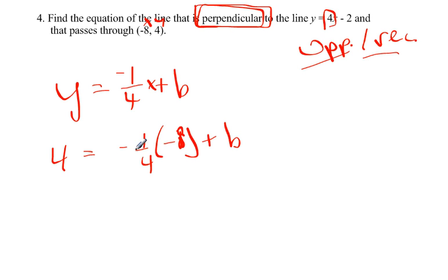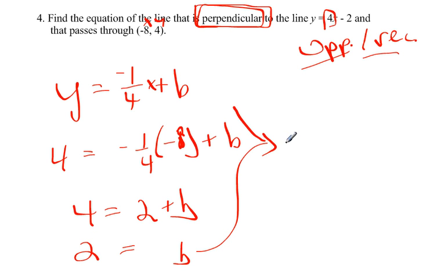A fourth of 8 is 2, and it's negative times negative is positive. So b equals 2 when I subtract 2 from both sides. So my final answer of the line perpendicular to this one is y equals negative one-fourth x plus 2.